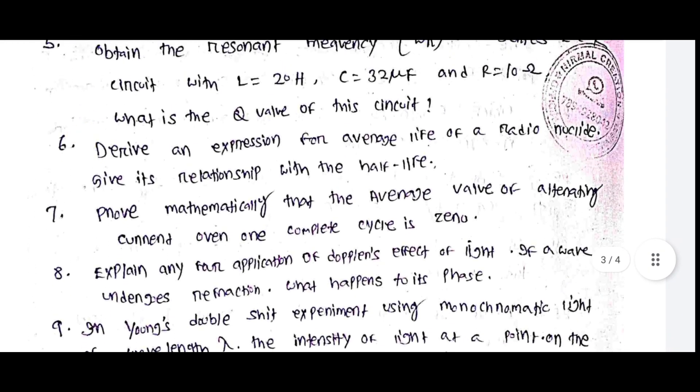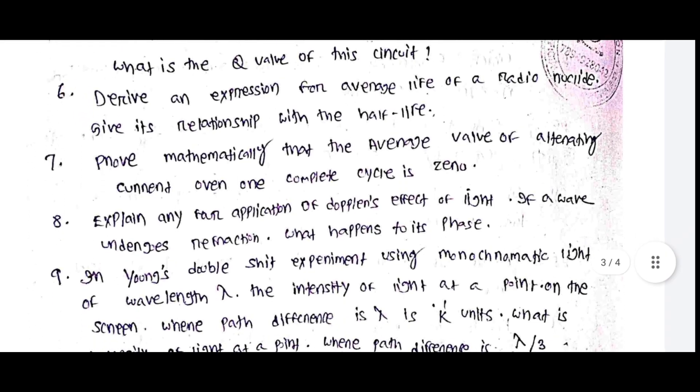Derive an expression for average life of a radionuclide and give its relationship with the half life. Prove mathematically that the average value of alternating current over one complete cycle is zero.